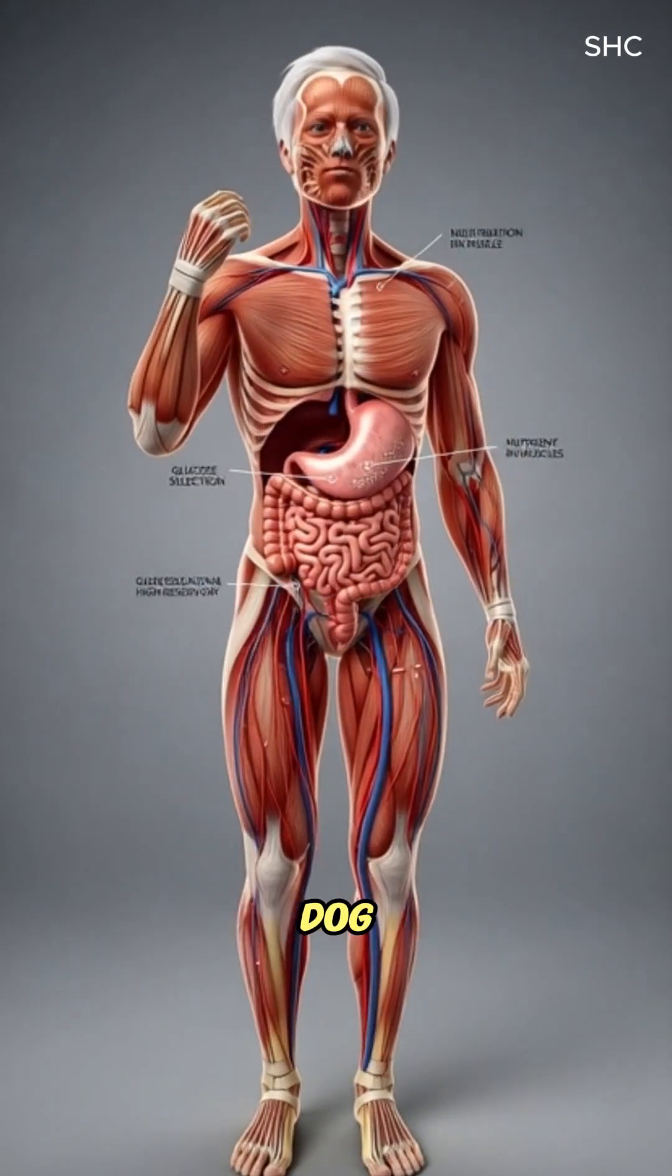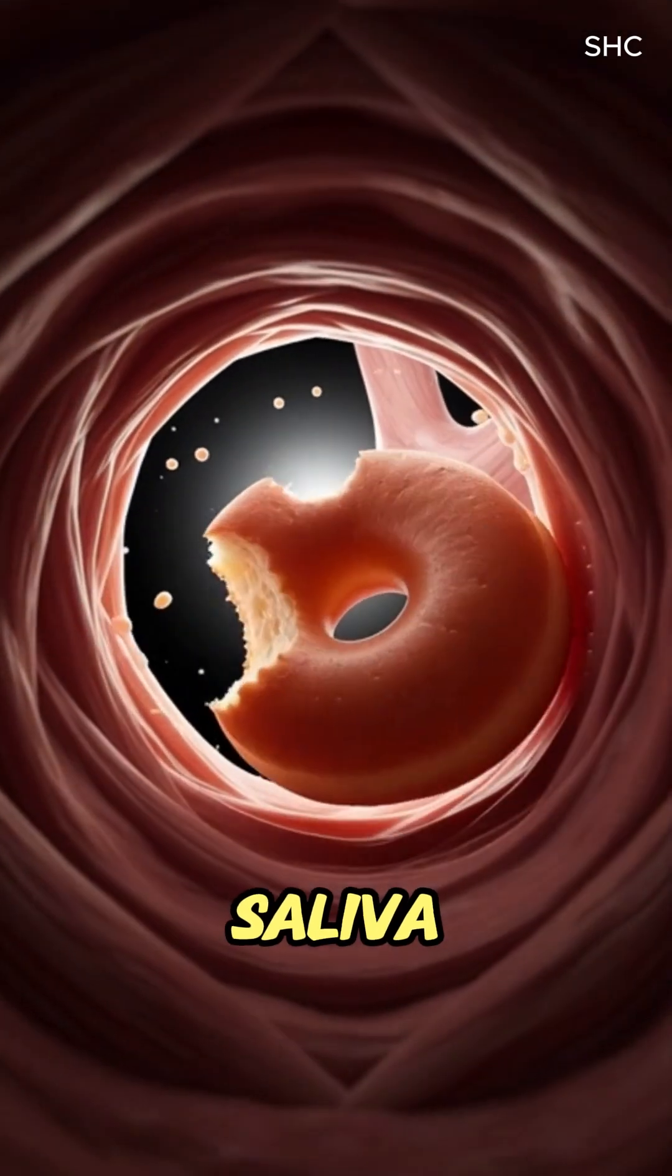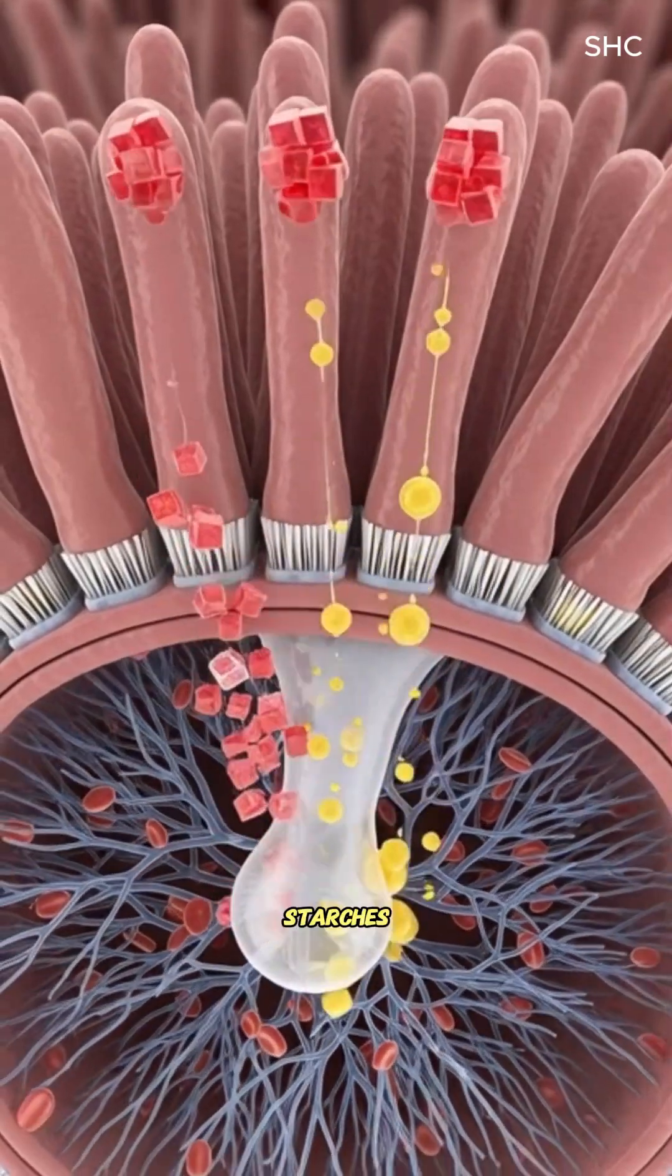As you take a bite of a doughnut, your teeth crush the soft, sweet dough, while saliva begins releasing enzymes like amylase to break down the sugars and starches.